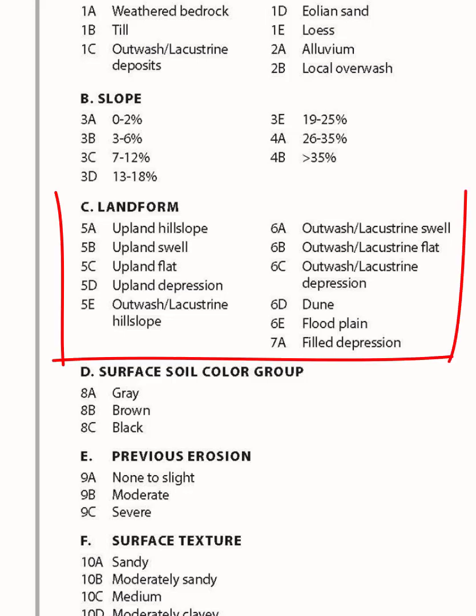Section C, Landform. An upland landform meets both of these criteria: one, the parent material is weathered bedrock, till, or loess; and two, the soil has normal development. An upland hill slope will be an upland landform with a slope greater than or equal to three percent. An upland swell will have a slope of zero to two percent and the area between the two slope stakes will be convex. An upland flat will have a slope of zero to two percent and yes will be circled for flat landscape on the site card.